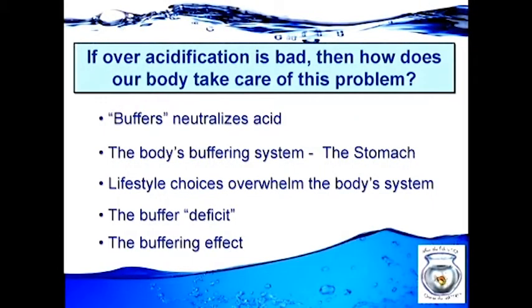If over-acidification is bad, how does the body take care of this problem? You have four channels of elimination to get rid of acid — respiration being one. What would happen if you weren't able to get rid of carbon dioxide? We know as kids we'd hold our breath and pass out in about three or four minutes, until the body neutralizes that acid. Carbon dioxide is an acid produced during metabolism — a gas. Acids take on different forms: gas, liquid or solid. The body has a system called the alkaline buffering system.